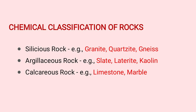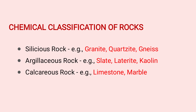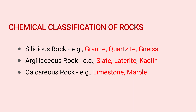Argillaceous rock is clay — examples include slate and laterite. Calcareous rock contains calcium carbonate and lime as the main constituent. Chemical Classification includes: Siliceous Rocks, Argillaceous Rocks, and Calcareous Rocks.